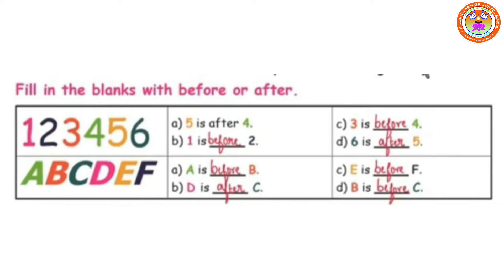See the next picture: A, B, C, D, E, F. Where is A? — A is before B. Where is D? — D is after C. Where is E? — E is before F. And where is B? — B is before C.